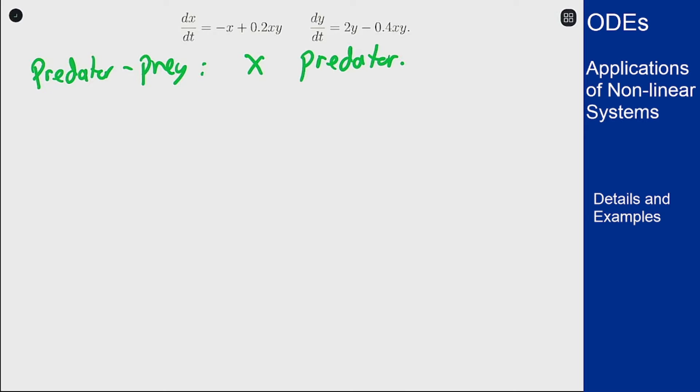So for the nullclines I want to figure out where the individual derivatives here are zero. So we'll have an orange dx/dt equaling zero which we factored before as x times negative 1 plus 0.2y, which happens at x equals zero and y equals 5.